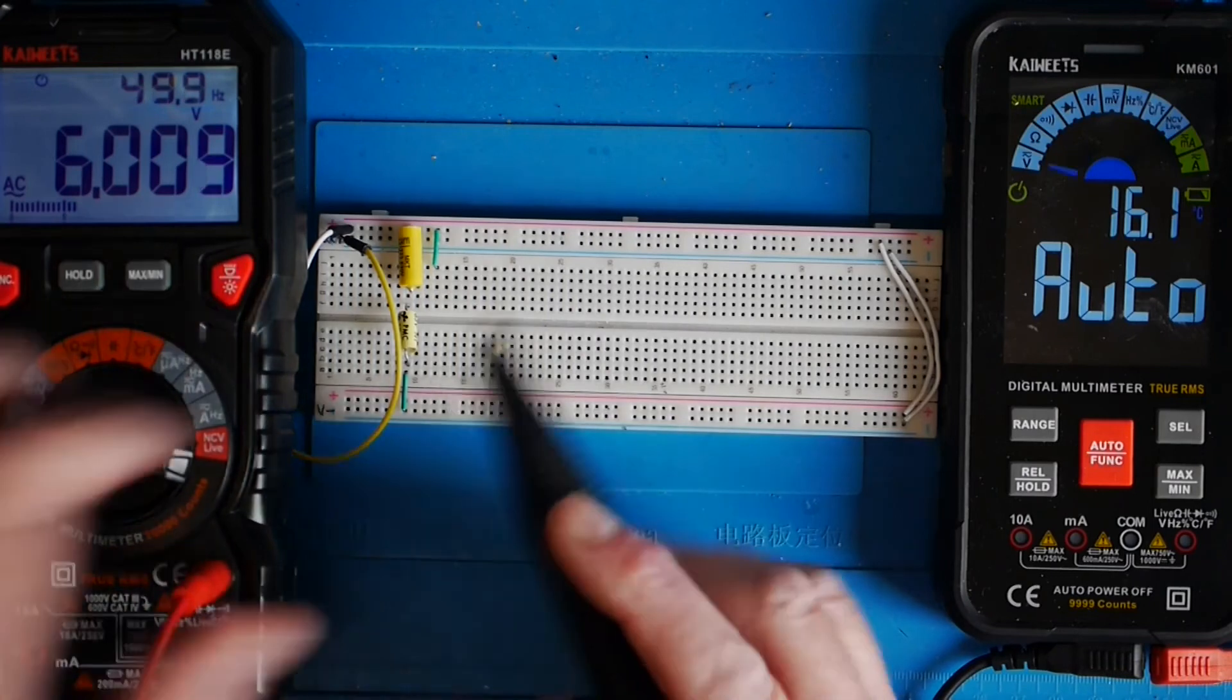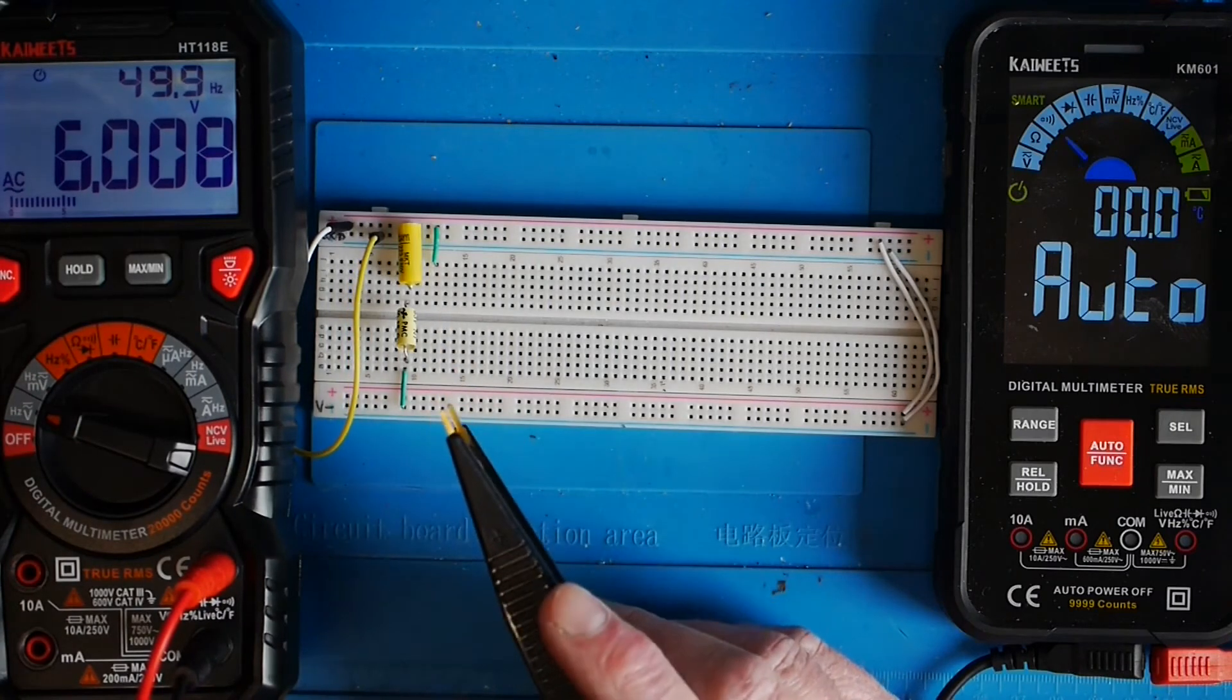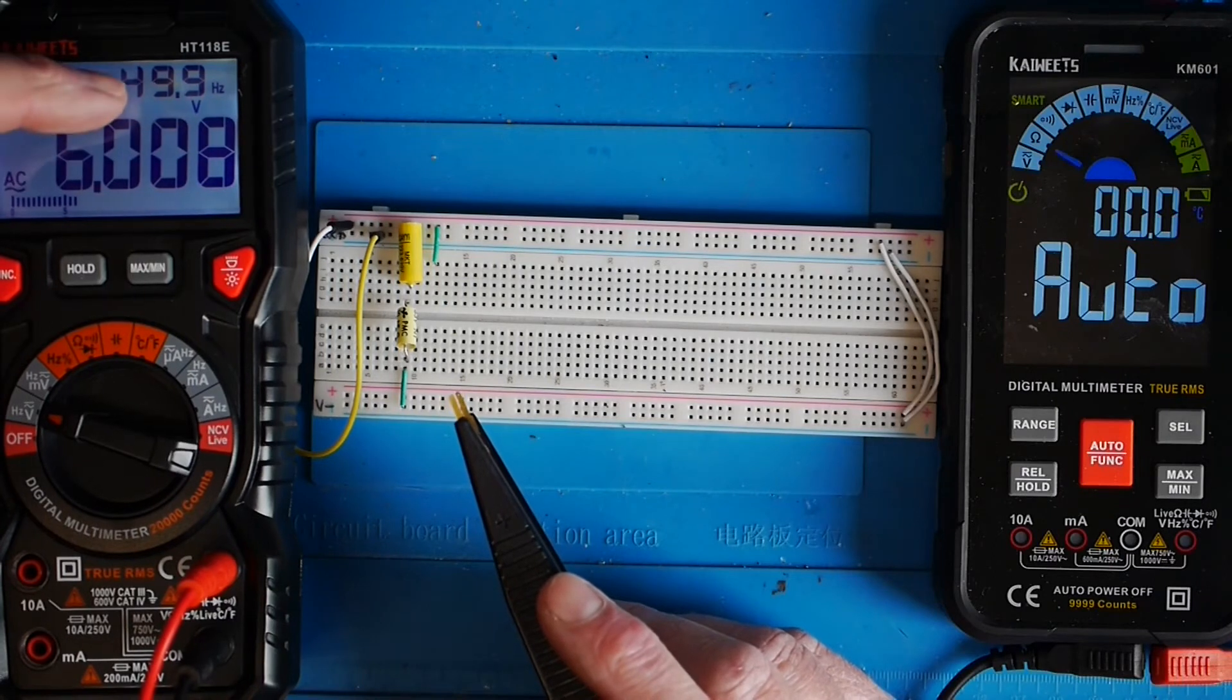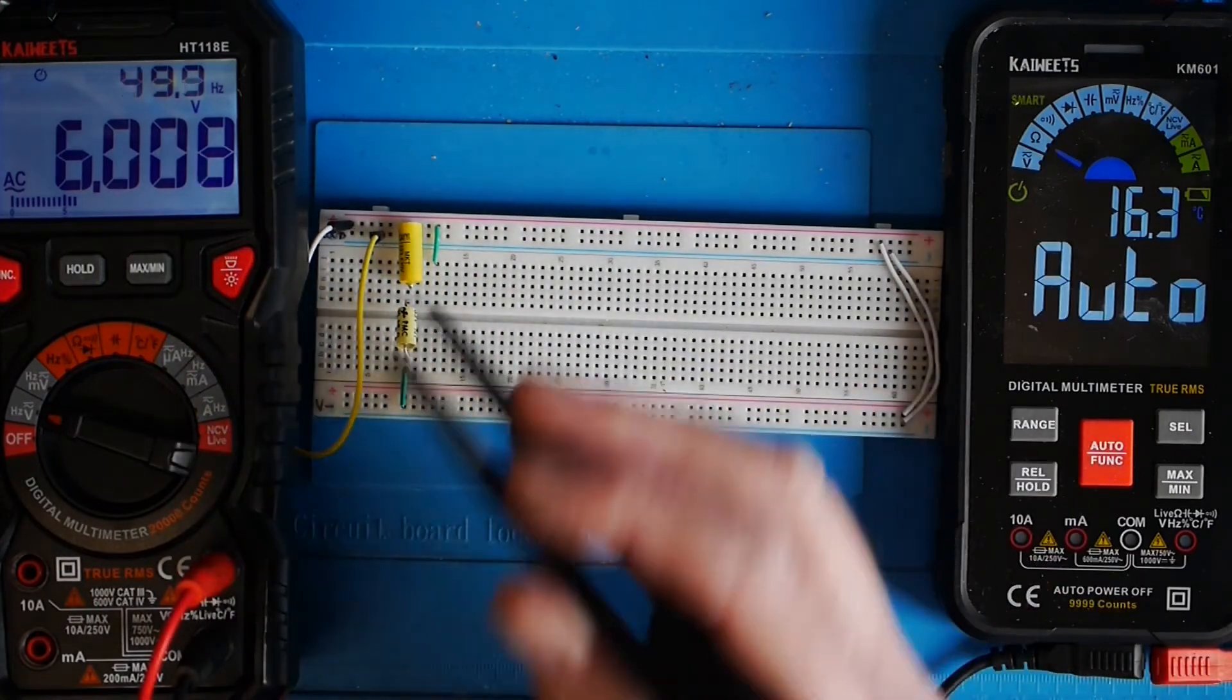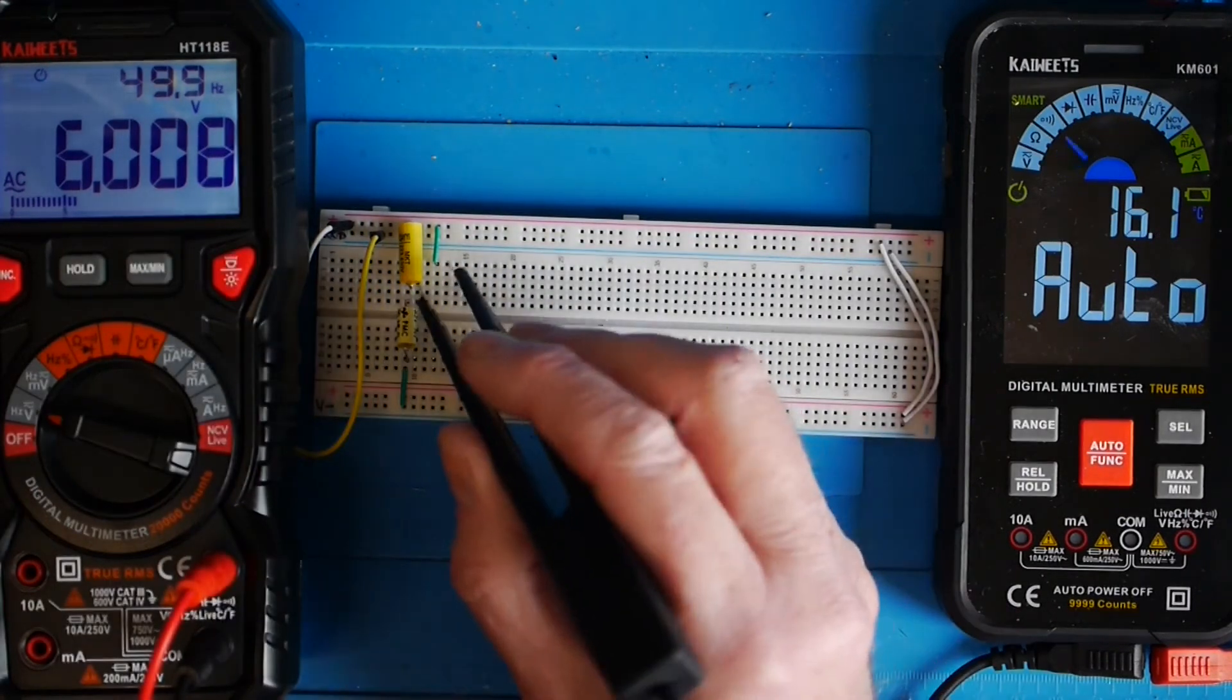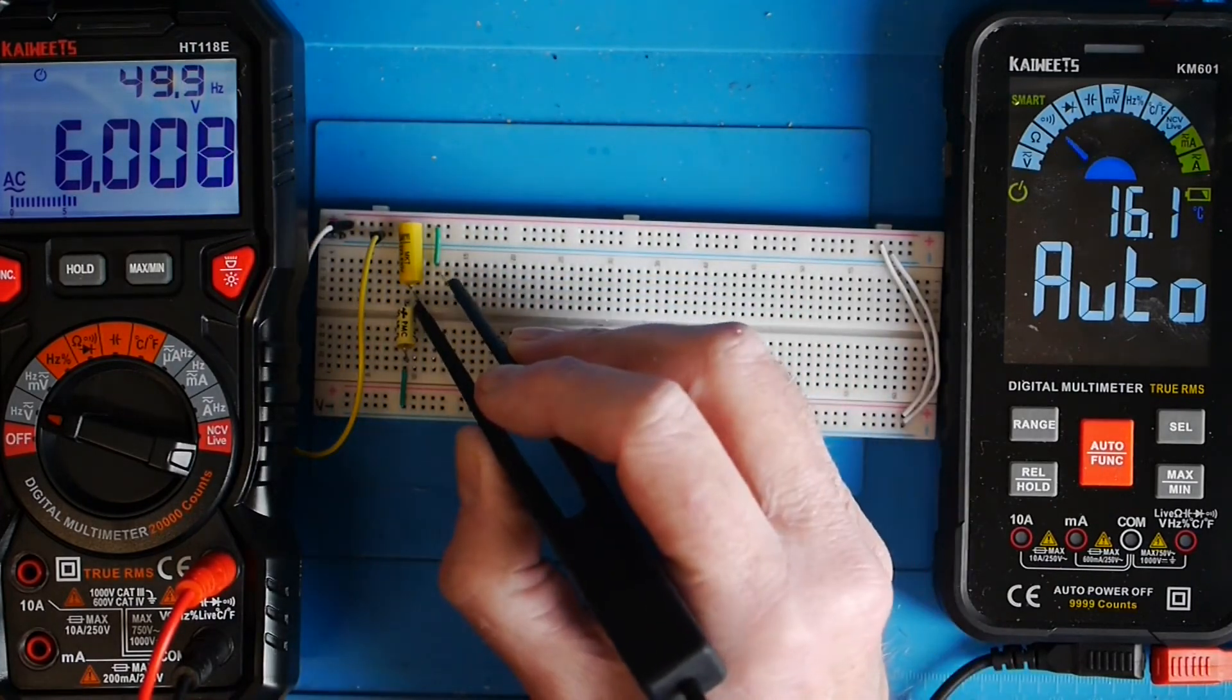I've still got the same two capacitors here, but this time I've got an AC supply. As you can see from this meter, now it's showing AC and we've got six volts, 6.008 volts at about 50 hertz. I thought we'd have 50 hertz if we're in the good old UK. Let's see what's going on now with these two capacitors. Remember there was pretty much nothing with DC. I've just put that little link in there so that it makes it easy to get the probes onto this slightly bigger capacitor.